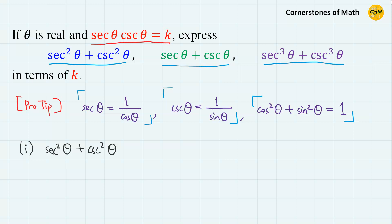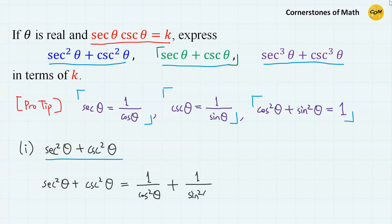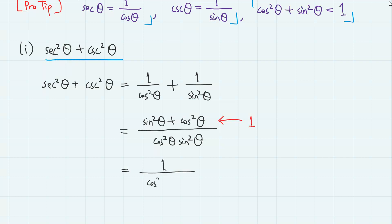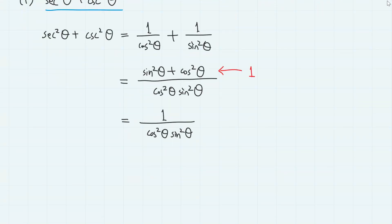First, sec²(theta) + csc²(theta). This comes prior to sec(theta) + csc(theta) because it is actually easier. Using the inverse relation, sec²(theta) is 1 over cos²(theta), and csc²(theta) is 1 over sin²(theta). Therefore, we have sin²(theta) + cos²(theta) divided by cos²(theta)·sin²(theta), and since sin²(theta) + cos²(theta) = 1, we simply have 1 over cos²(theta)·sin²(theta). The inverse of cos² is sec², and the inverse of sin² is csc², so we have sec²(theta)·csc²(theta), which is simply k².